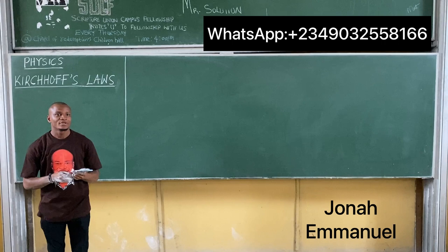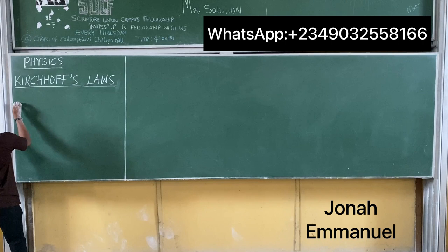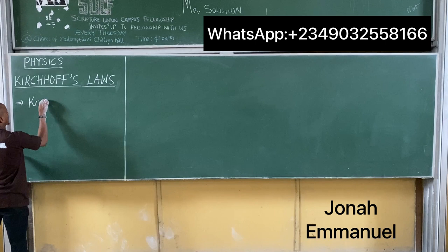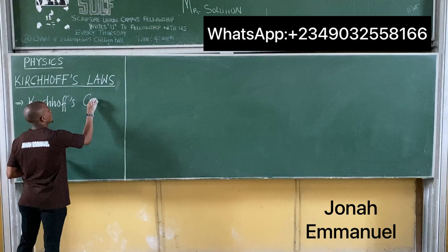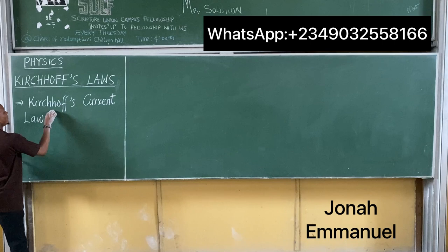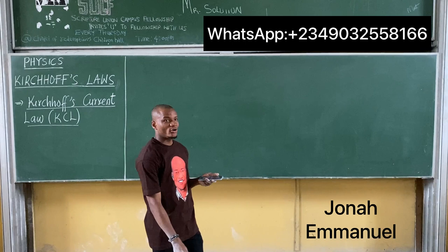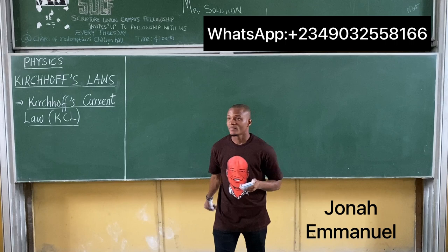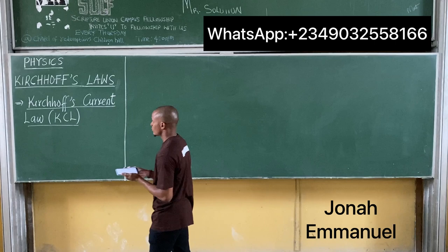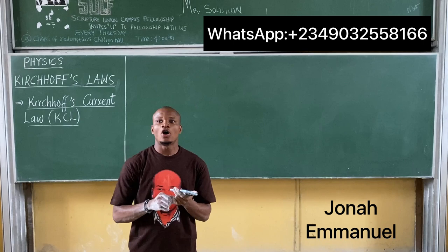There are two types of Kirchhoff's Law. The first is called Kirchhoff's Current Law, popularly called KCL. This is Kirchhoff's first law and it's also called the Junction Rule.